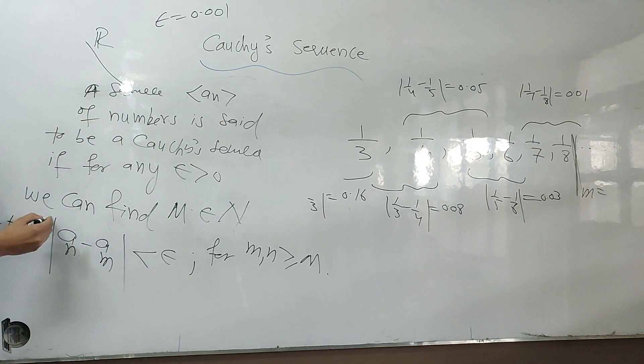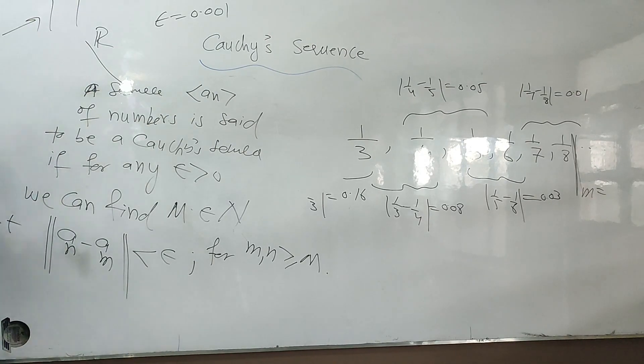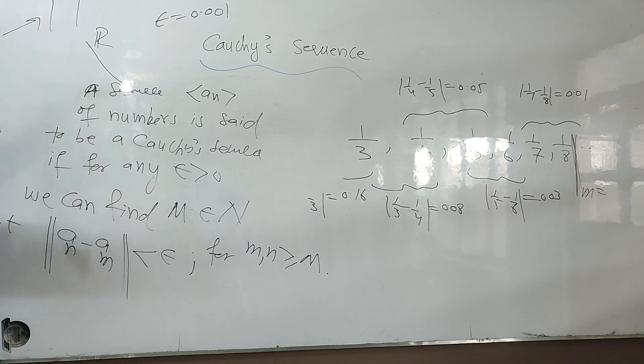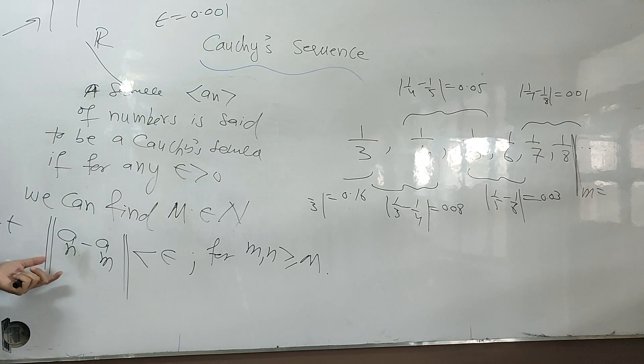So when we have norm, we simply use this. Because for distance, we may have different formulas. In R, we have for distance, the absolute value. Right? But we don't use absolute everywhere for distance. Every place has different distance formulas. So the formula may be different.